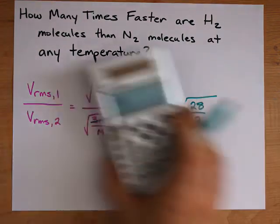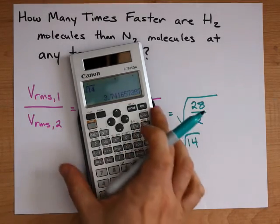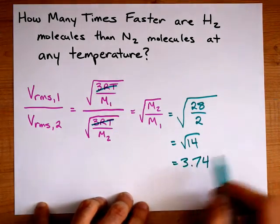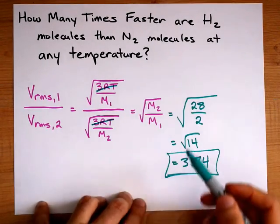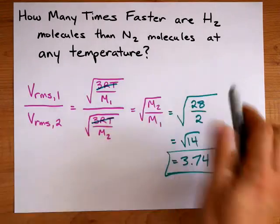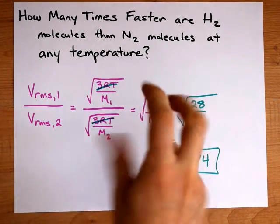The square root of 14 is 3.74, which means H2 travels 3.74 times faster than N2 molecules on average. Thus, if the molecules are escaping through a hole, or effusing through that hole, the H2 molecules will escape 3.74 times faster.